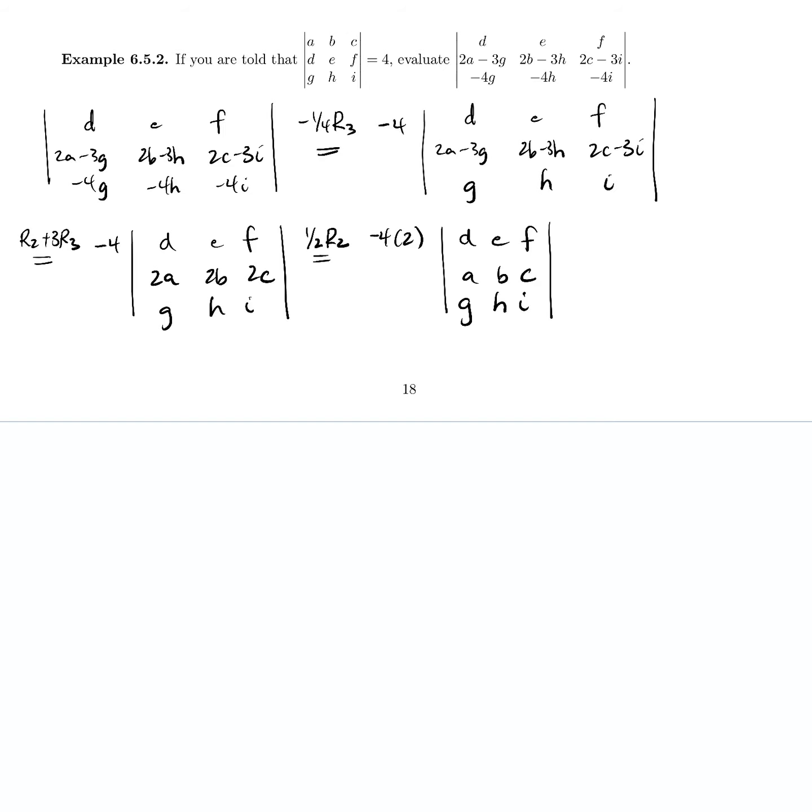One step left to get us back to the original form, and that is an interchange. And so the interchange of row 1 and row 2, where we know an interchange makes the determinant negative, so negative negative 4 times 2 times the determinant ABCDEFGHI,